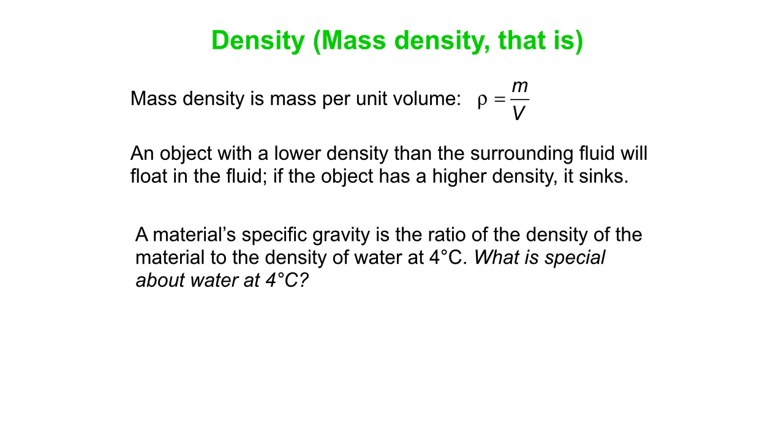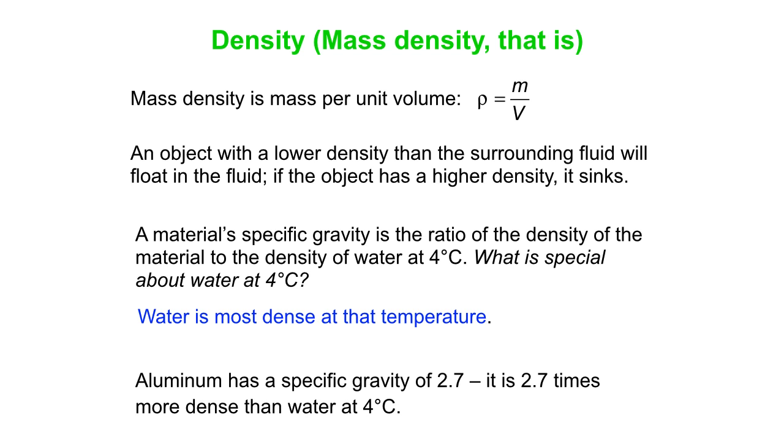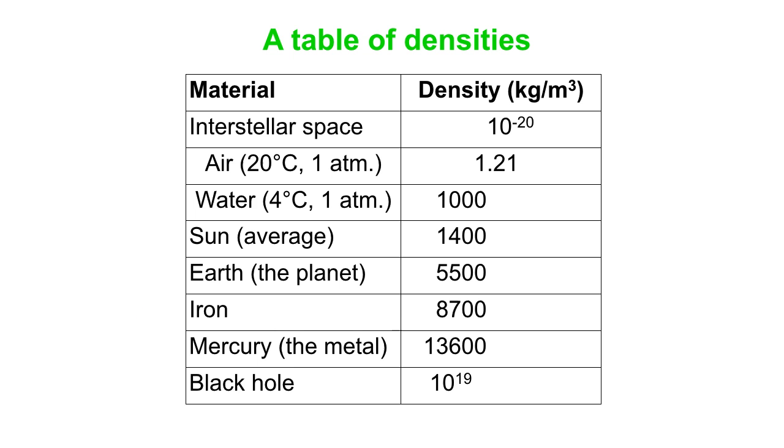And we can also talk about specific gravity. So that's the ratio of the density of the material to the density of water at 4 degrees Celsius. So what's special about water at 4 degrees Celsius? Seems like a funny number to pick. But it turns out water is most dense at that temperature. So for instance, aluminum has a specific gravity of 2.7, which means it is 2.7 times more dense than water at 4 degrees Celsius. The aluminum doesn't have to be at 4 degrees Celsius.